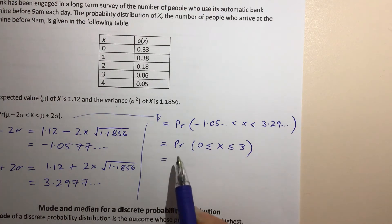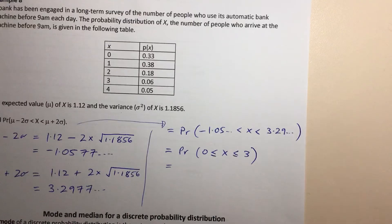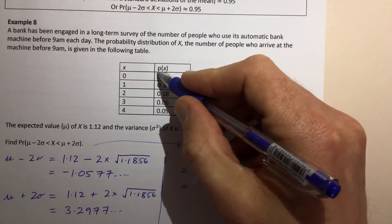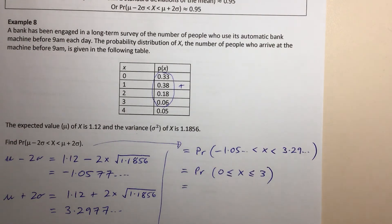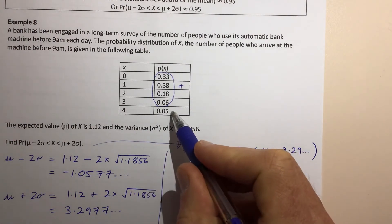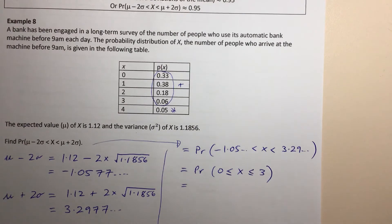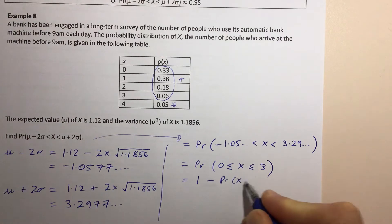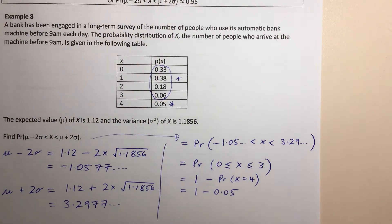To work out the probability that X is between 0 and 3 inclusive, we can add the probabilities for X equaling 0, 1, 2, and 3. But probably the easiest way is to just do 1 minus the probability that X equals 4, so 1 minus 0.05, which is much easier without a calculator. That equals 0.95.